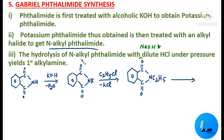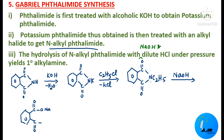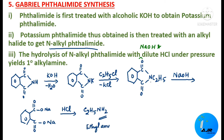In the third step, hydrolysis of N-alkyl phthalimide with NaOH and dilute HCl under pressure yields a primary alkyl amine. First, treatment with NaOH gives the sodium salt of phthalic acid. Then, hydrolysis in the presence of dilute HCl gives ethylamine, C2H5NH2, plus phthalic acid. So ethylamine — the primary amine — is the product from Gabriel Phthalimide Synthesis.